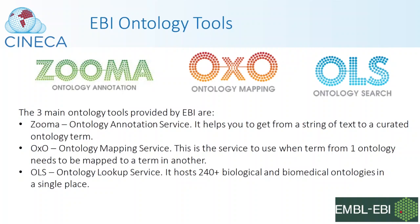OXO, our ontology mapping service, is used in a case where you have already found an ontology term but it is not a term in the ontology you want to use. The question is how do you move from an ontology term in one ontology to a term in another ontology. Our ontology lookup service OLS is the service you use once you have identified the ontology term you want — you can look up this term and it will provide you with additional information regarding that term based on the information already captured as part of the ontology.